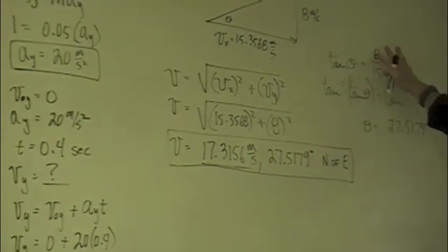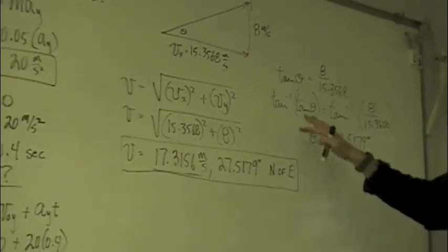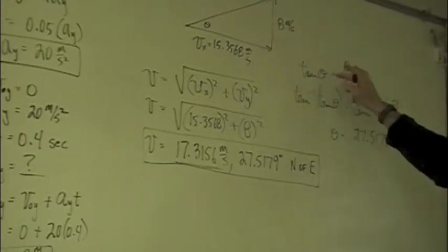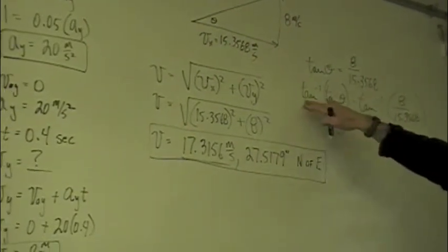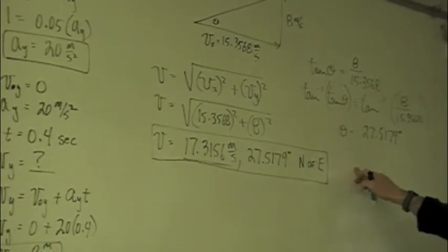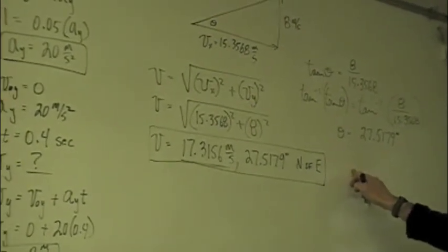And then we use trig to figure out the angle. We have opposite and adjacent, so we're going to use tangent. Once we use the inverse tangent, we come up with an angle of about 27.5179 degrees.